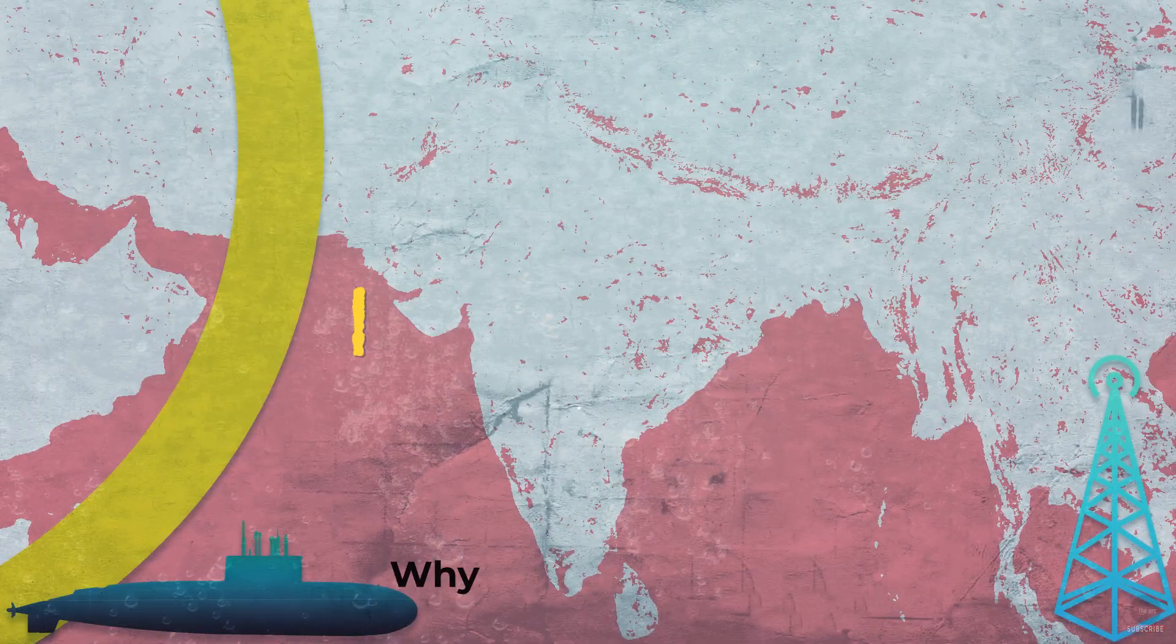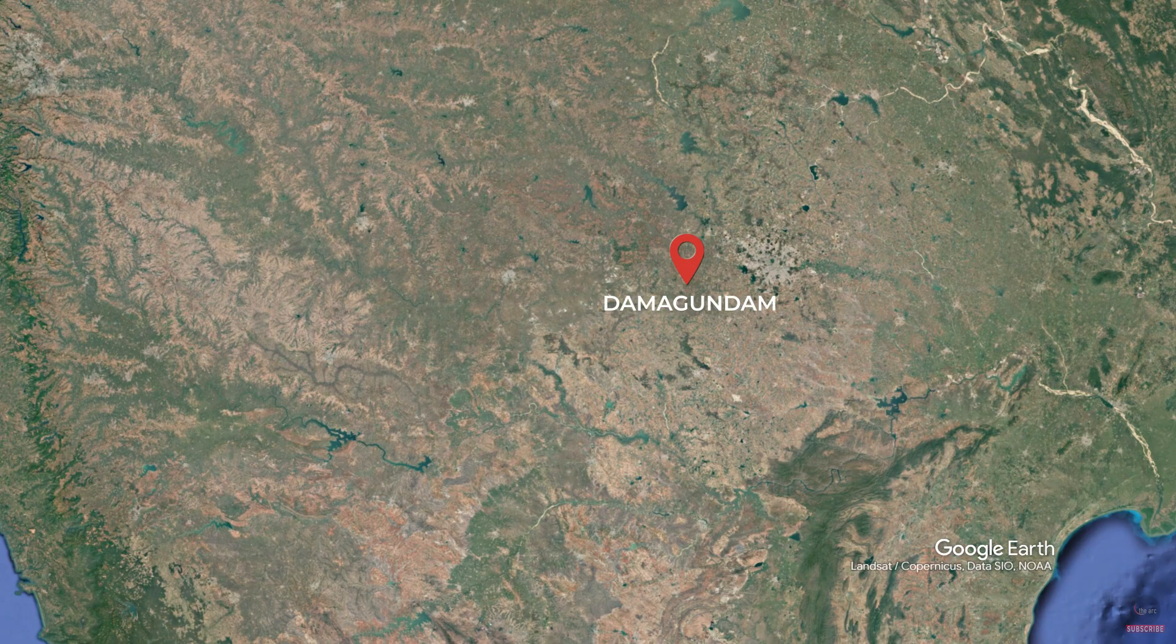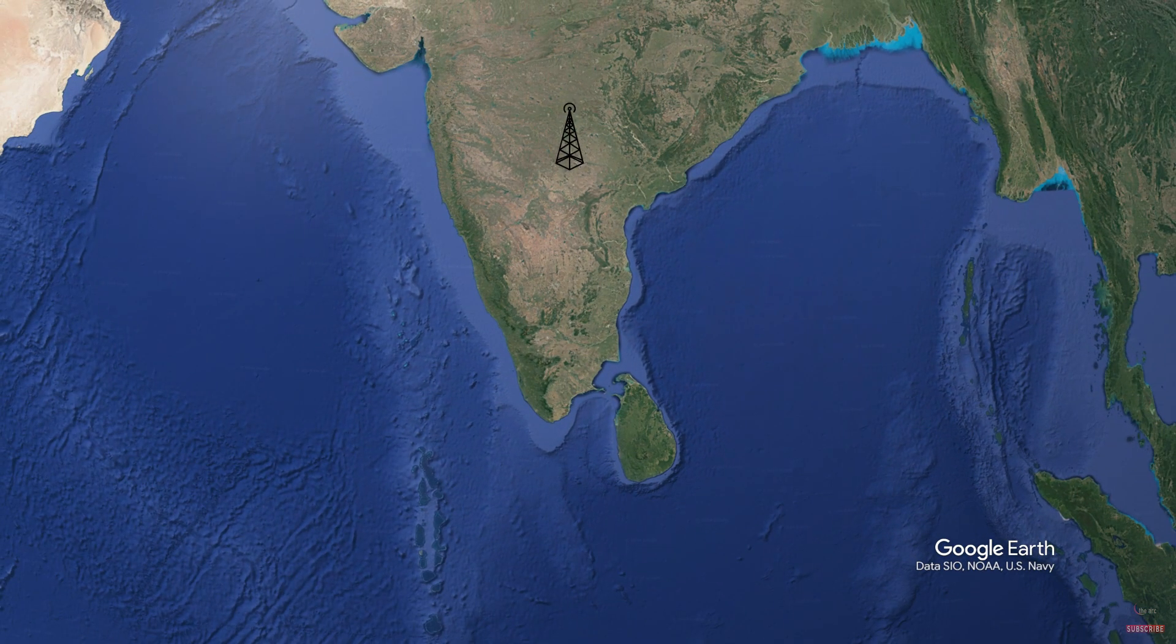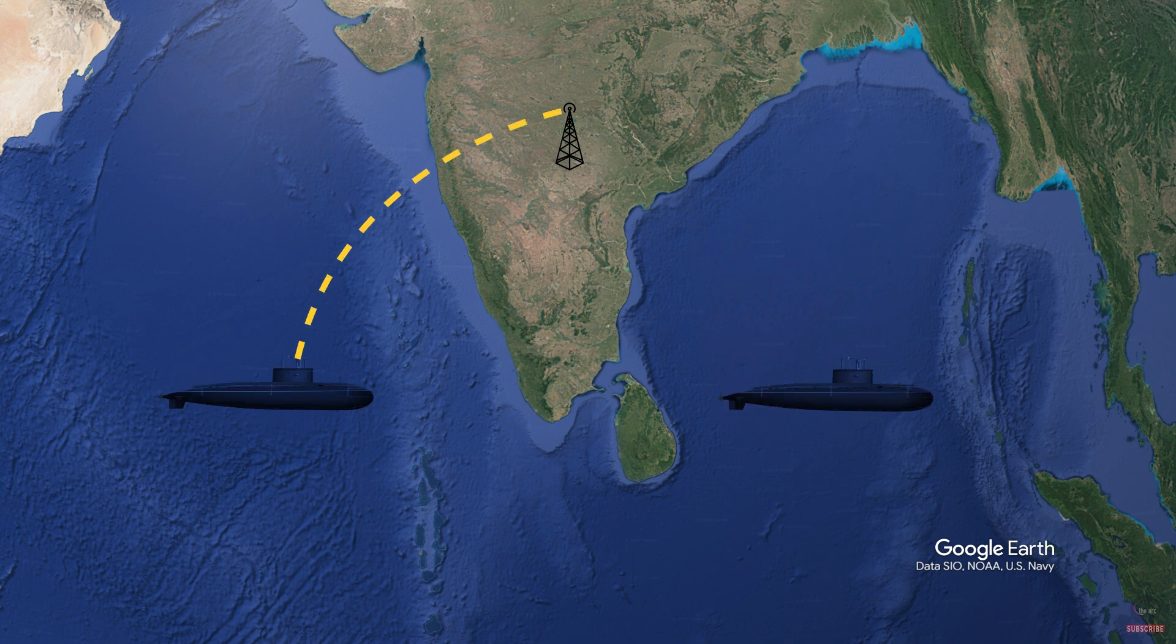You must be wondering why the Navy selected Damagundam as its VLF station, 300 km away from the coast. Because of its ideal location. Indian Navy needed a place at a higher altitude, at least 250 feet above sea levels, but away from the coast. Now if you look at its location, you can see it's in the hinterlands in Telangana. But what you don't see, it is strategically located right at the middle of the Indian peninsula. From where communication is feasible with Navy's submarines in the Arabian Sea, Bay of Bengal, and the Indian Ocean.